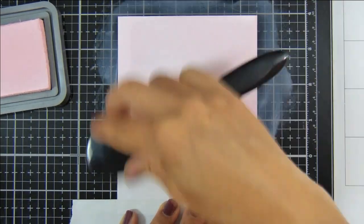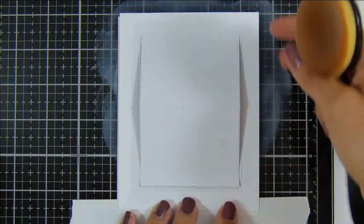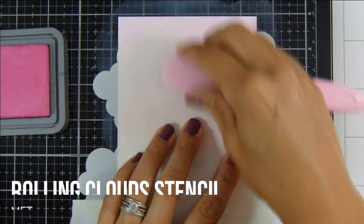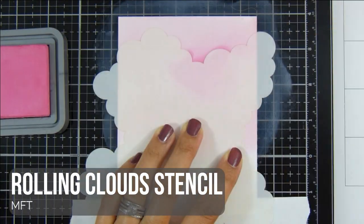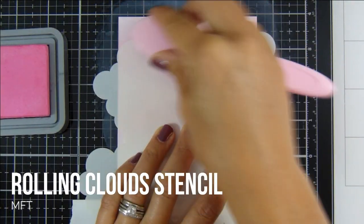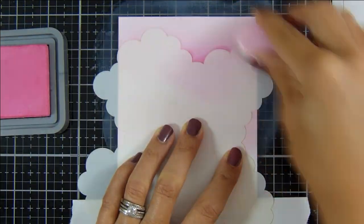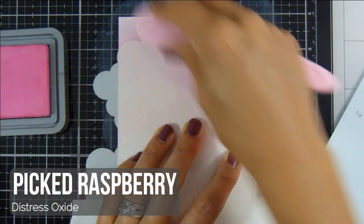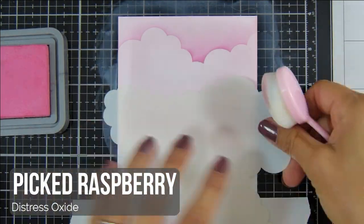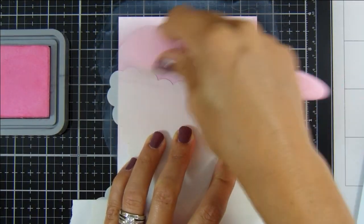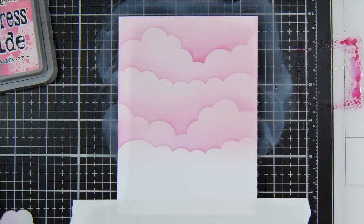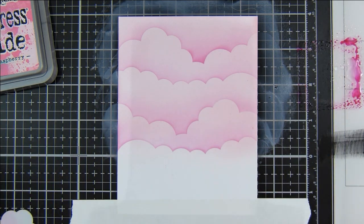I have sped this footage up, and now I can come in with picked raspberry distress ink and my rolling cloud stencil by My Favorite Things. I'm going to just twist and turn the stencil all the way down where I put that spun sugar for a pink tone-on-tone cloud effect.